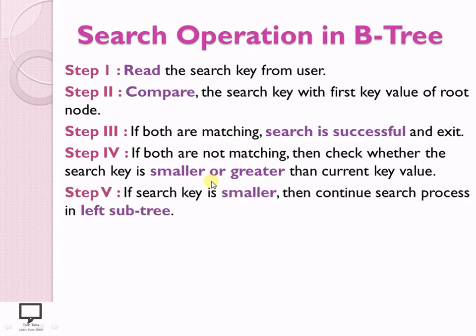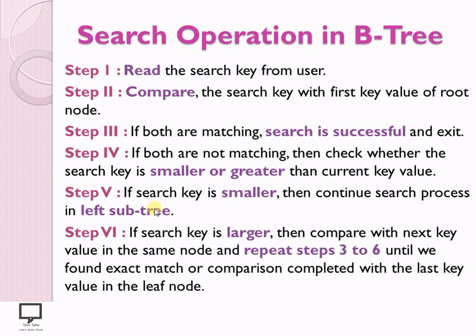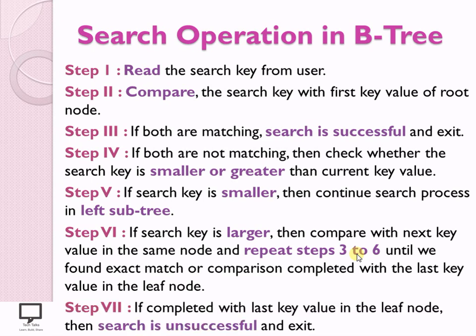From the comparison, I need to take a decision. In step 5: if the search key is smaller, continue the search in the left subtree. But if the search key is greater than the current key value, repeat steps 3 to 6 — perform the comparison again and decide whether to go to the left subtree or right subtree, and so on. If I reach the end of the tree, the search is unsuccessful and I stop.